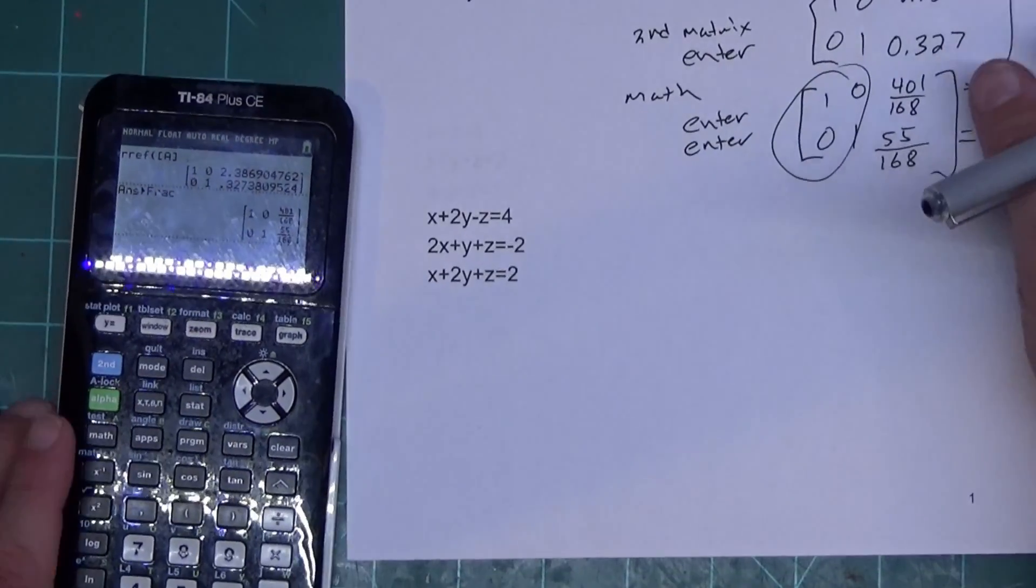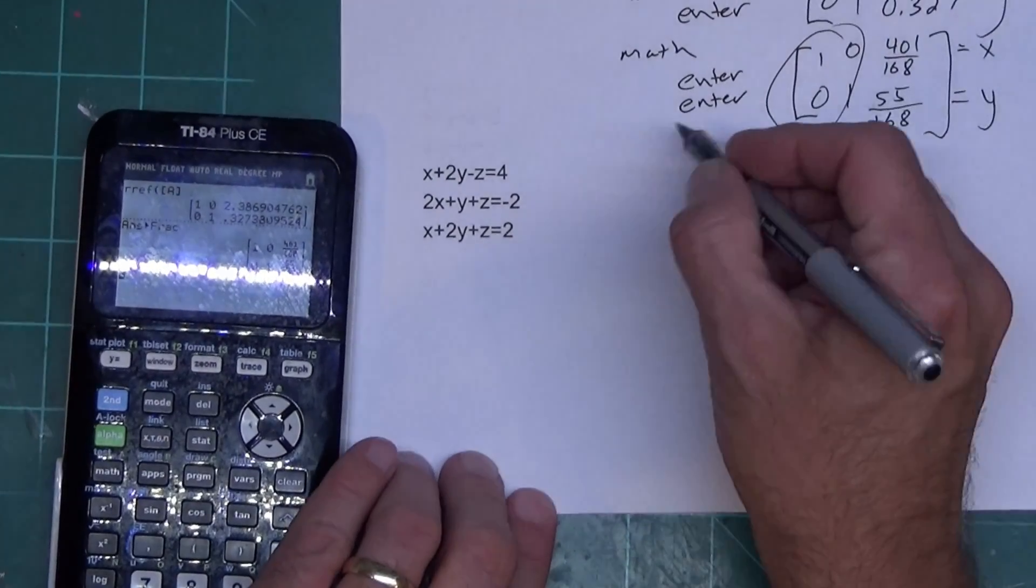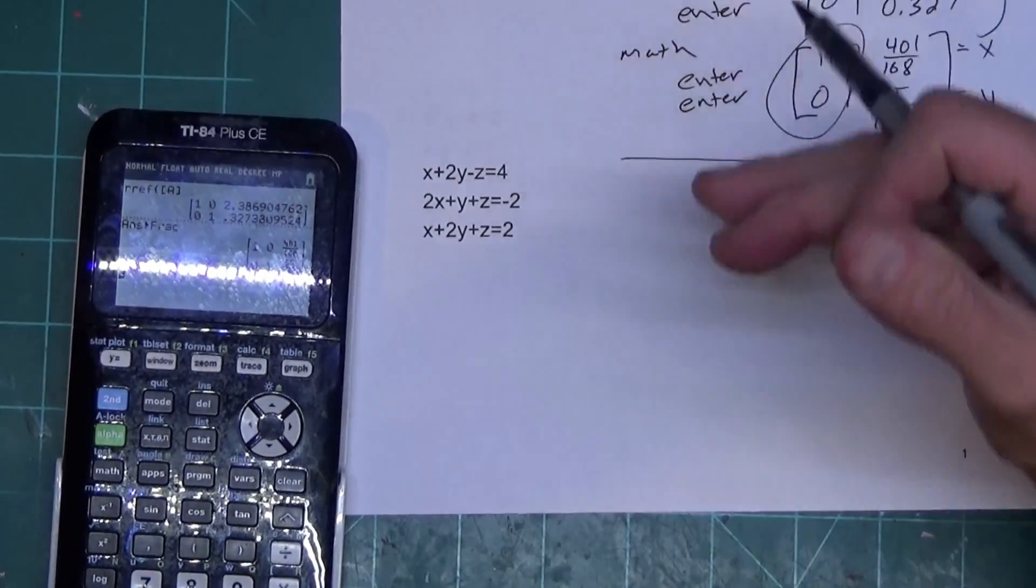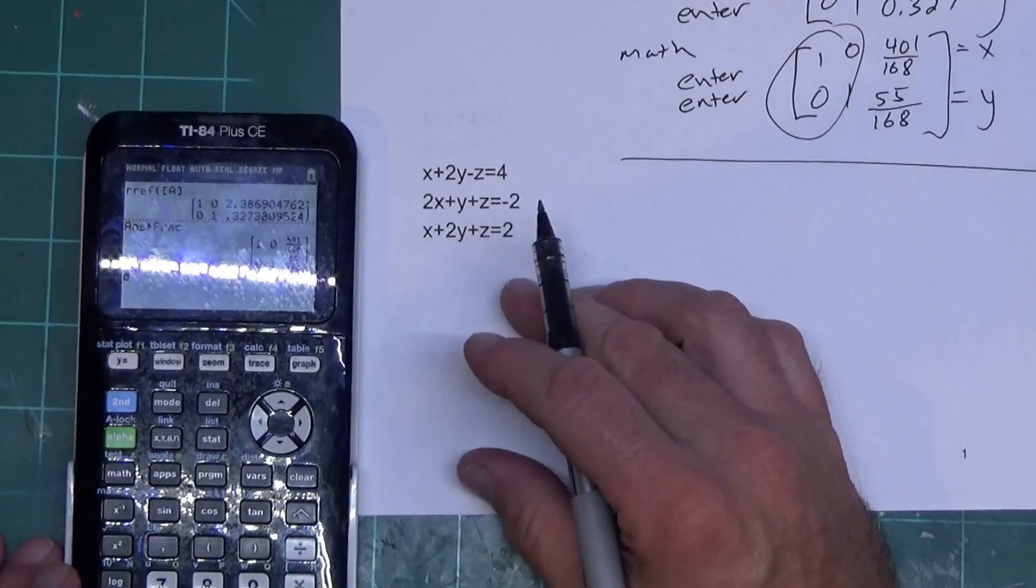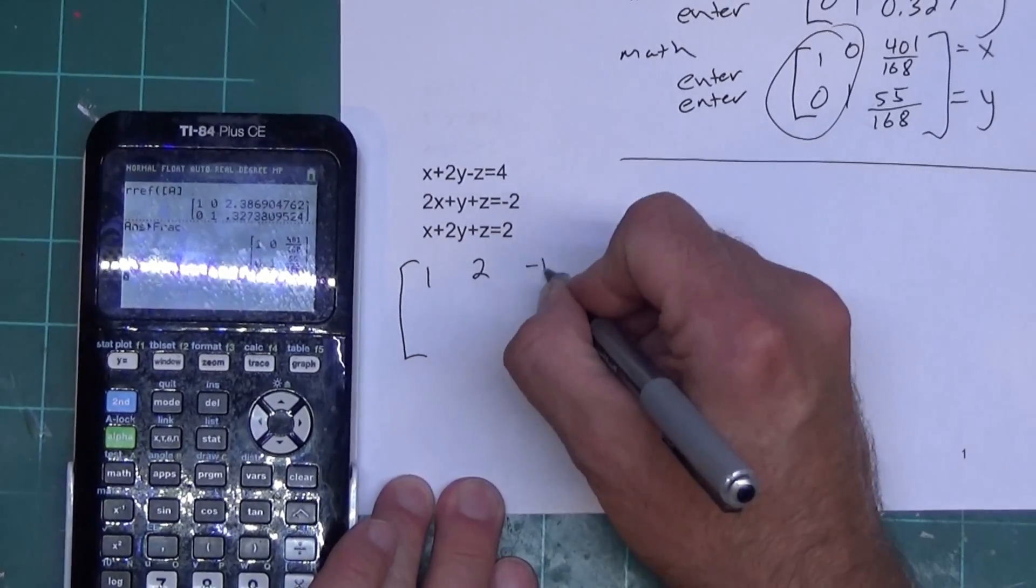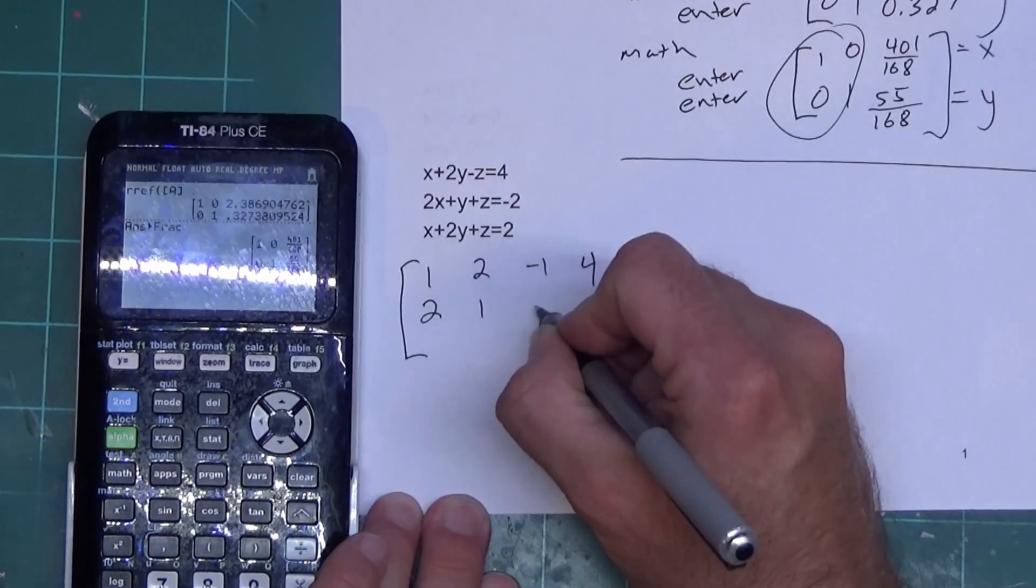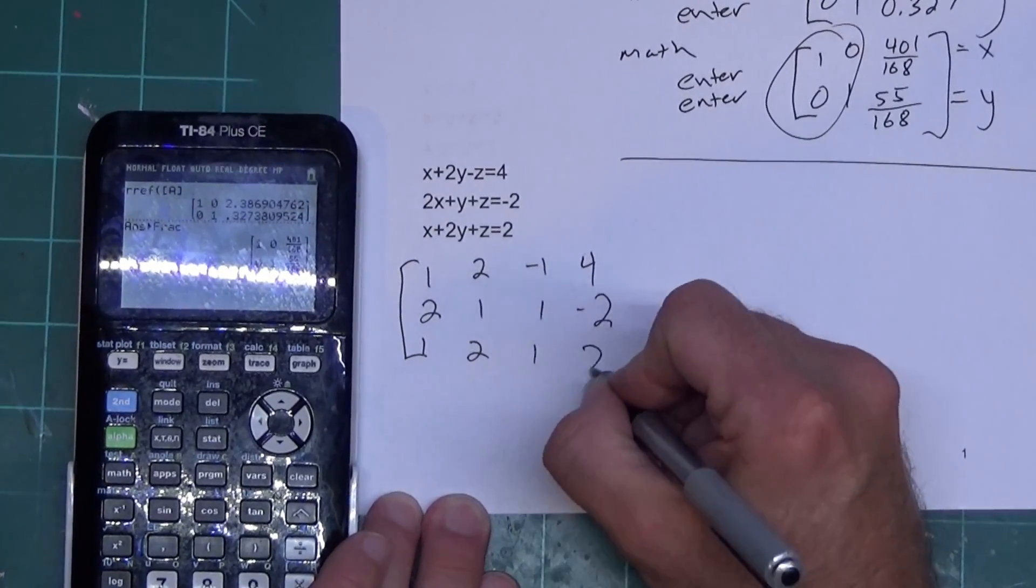So we'll go down to this next one. This one is a 3 by 4 matrix. So first thing I've got to do is put that in a matrix. Now the good thing is I'm going to follow through the same calculator command so I'm not going to write them down. To put it in a matrix I'm going to go 1, 2, negative 1, 4, 2, 1, 1, negative 2, 1, 2, 1, 2.